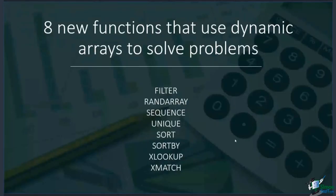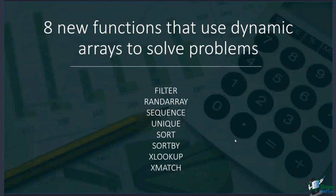Let's take our first look at what these eight functions are. We've got FILTER, RANDARRAY, SEQUENCE, UNIQUE, SORT, SORTBY, XLOOKUP — my favorite — and XMATCH. Now, these are what we call dynamic arrays. I want to start by going through what an array function is — a basic array — so you understand the concept, because to understand dynamic arrays, you need to understand what an array function is.